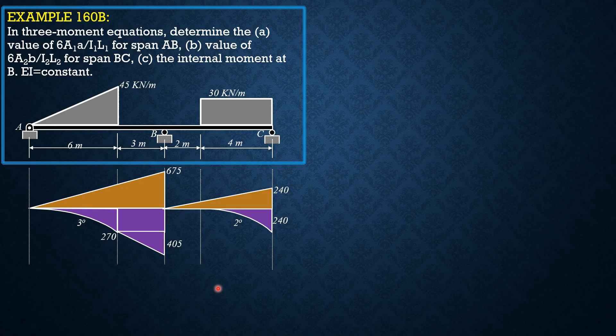Let's now evaluate 6 area 1A over I1L1 for span AB, which is equal to 6 over 9, 6 over 1 times 9 times the quantity area of this triangle is 1 half of 9 times 675. Then, the distance of the centroid from the left is 2 thirds of 9 or 6. So, 1 half of 9 times 675 times 6.